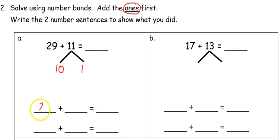I'm going to start with the 29 but this time I'm going to add my 1. 29 plus 1 equals 30. So I'll take that 30 and I'll add the 10. 30 plus 10 is 40. So 29 plus 11 equals 40.